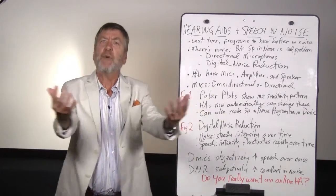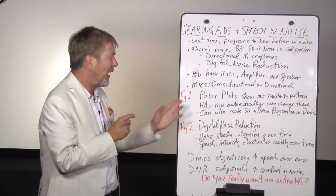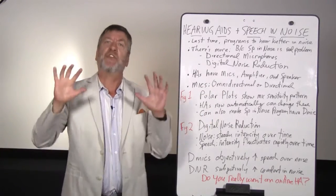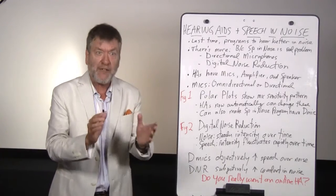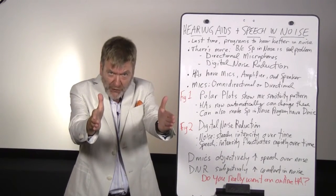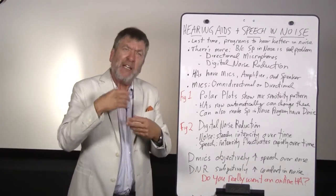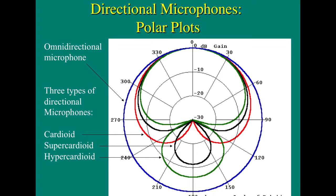Microphones can be omnidirectional or they can be directional. Omnidirectional means they pick up sounds in all directions equally. Directional means that microphones are focusing on picking up sounds in a certain direction. To illustrate this further, let's look at Figure 1.